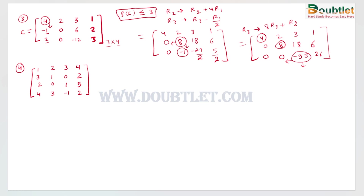Now we count the number of non-zero rows. The first row is non-zero, the second row is non-zero, and the third row is also non-zero. So the rank of matrix C is three, or we write it as ρ(C) = 3. This is how we find the rank of a non-square matrix.